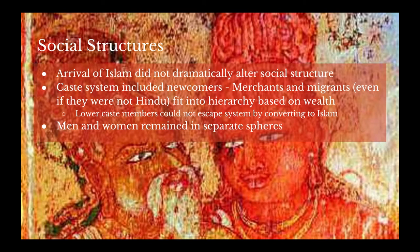Another good example showing that social structures didn't change incredibly when Islam arrived is that men and women were relegated to entirely separate social spheres. The practice of sati — where a woman throws herself on her husband's funeral pyre — gives a sense of the differences in terms of gender in India at this point in history. There was definitely still a gender divide in terms of power, even after Islam reached the region.